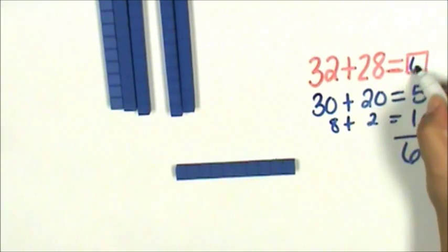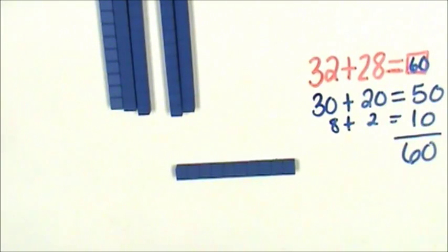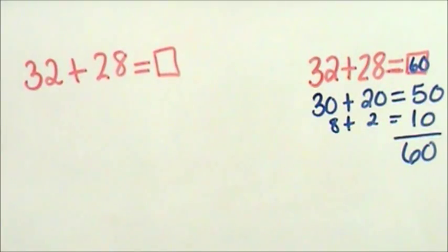That means five tens and one ten is six tens and that's sixty. Thirty-two plus twenty-eight is equal to sixty. Let's look at this problem again.